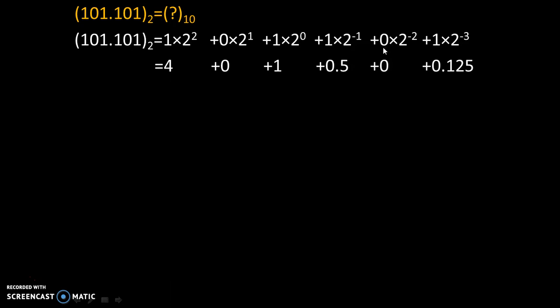Anything multiplied with 0 gives 0. And over here, 1 into 2⁻³ is nothing but 1 into 1 divided by 2³. 1 divided by 8 is 0.125. And 0.125 into 1 gives 0.125. Finally, the addition of all these numbers gives us the answer 5.625.